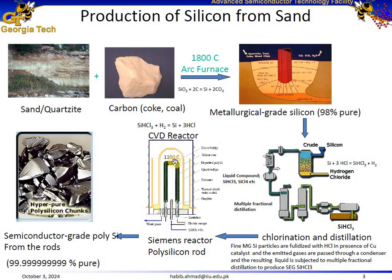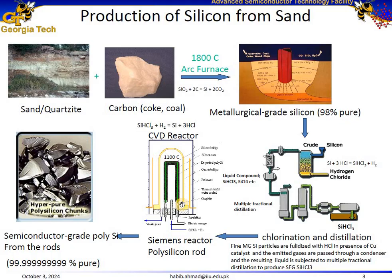The next step is the chemical vapor deposition process. The purified trichlorosilane is fed into a chemical vapor deposition reactor at a temperature of 1,100°C. Inside the reactor, trichlorosilane reacts with hydrogen, depositing silicon on rods in the form of hyper-pure polysilicon chunks. This step achieves an extremely high purity level — if you count the number of nines, it's 11-in purity silicon. This silicon is called semiconductor-grade polysilicon.